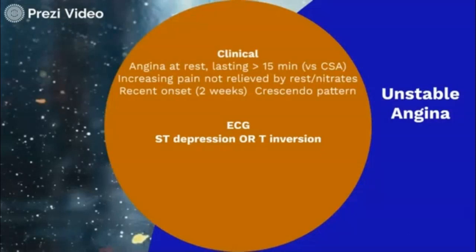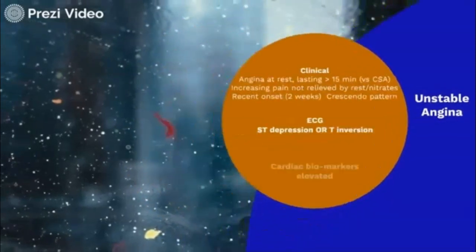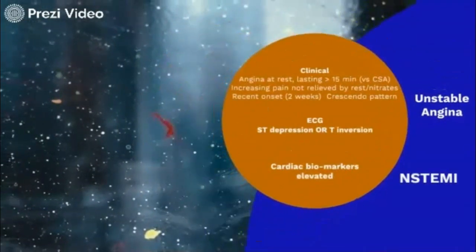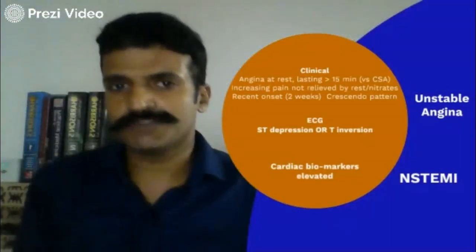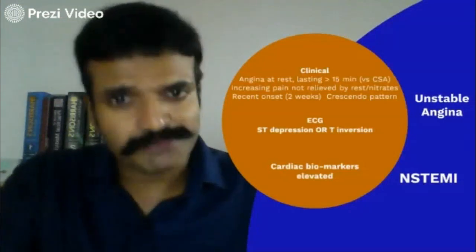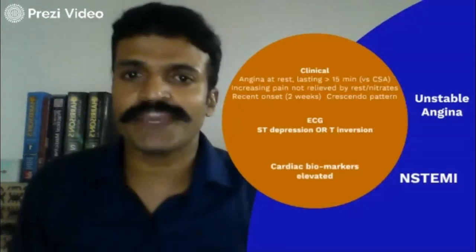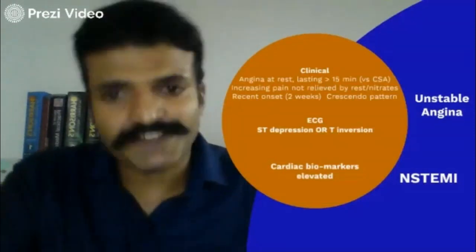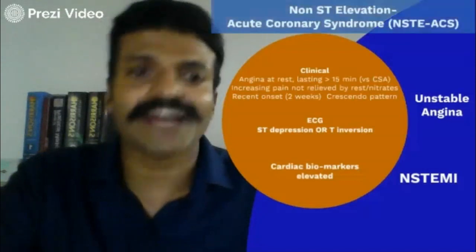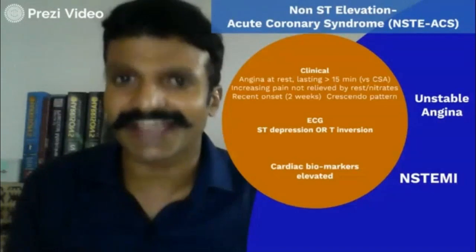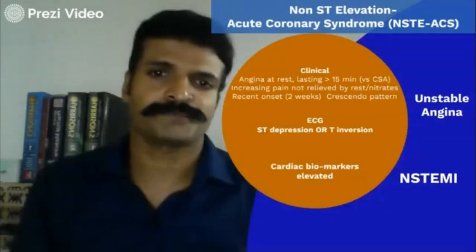Once you have infarction — that is, once the cardiac biomarkers are positive — we will give it an additional name, which is NSTEMI. Unstable angina and NSTEMI are both terms for subendocardial ischemia or infarction. The two conditions are managed in the same way, so from now on, unstable angina and NSTEMI will be combined into an entity called non-ST elevation acute coronary syndromes.